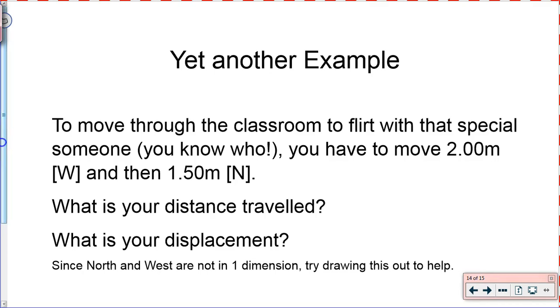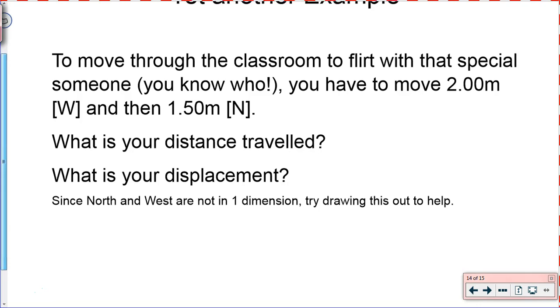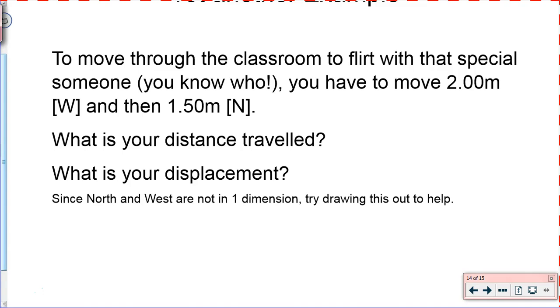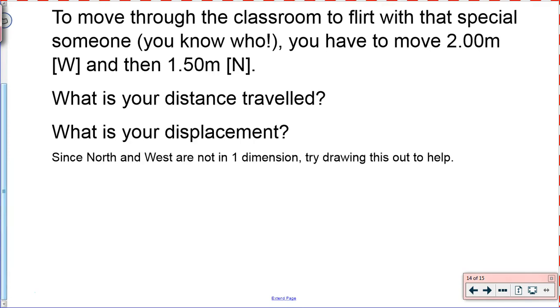Let's move through the classroom to flirt with that special someone. You know who. You have to move 2.0 meters west, and then 1.5 meters north. What is your distance traveled? What is your displacement? So again, we're going to take a look at this example, and again, we're going to find distance just like we had before. You know what? We could probably just jump to the answer on this one. So your distance traveled, give it a shot. You should get 3.5. And our displacement, if we go through the calculation, we have two directions, so we'd be using Pythagoras' theorem, and we're going to get 2.5 meters northwest.